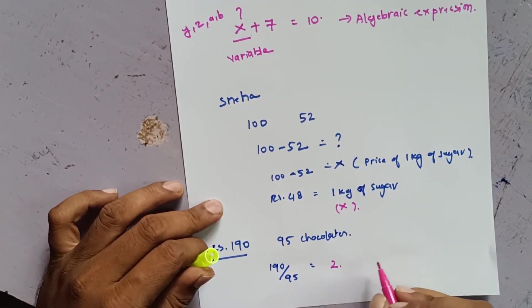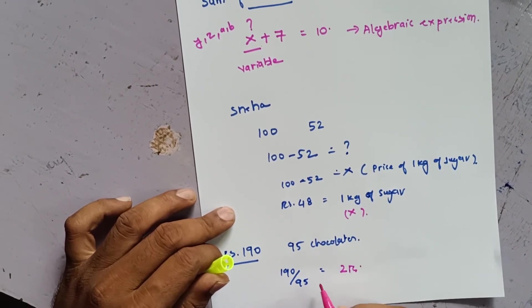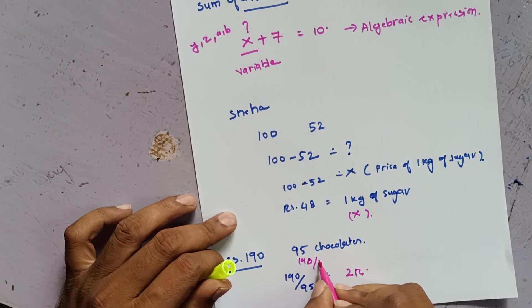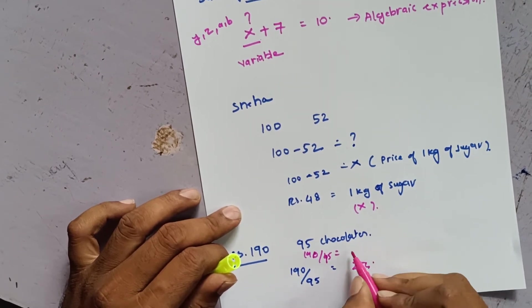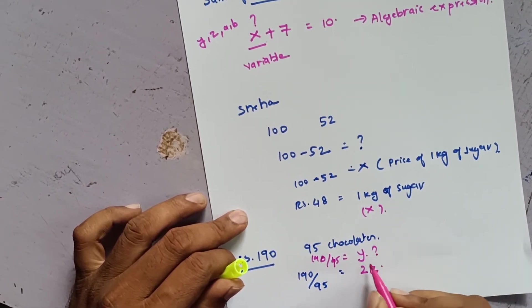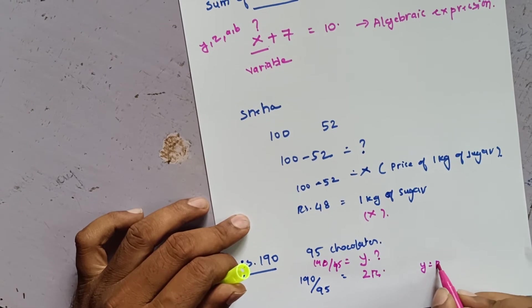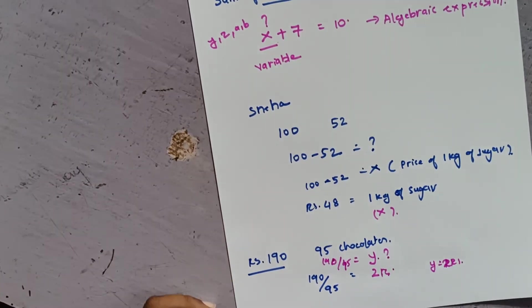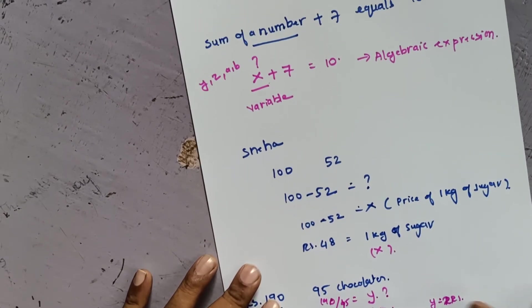The cost of one chocolate, which was unknown before, I'm going to call Y. So Y equals 2 rupees. This is how algebraic equations are used in real life. Now let's look at some common terms used in algebraic equations.